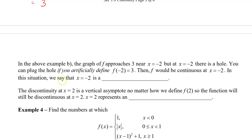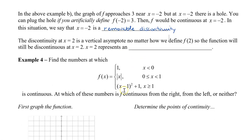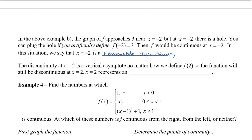In this situation, we say that x equals negative 2 is a removable discontinuity — this is an example of a removable discontinuity. At x equals 2, where there was a vertical asymptote, it doesn't matter what we define for f of 2; it's always going to be an asymptote and the function will still be discontinuous. So the value at x equals 2 represents an infinite discontinuity.